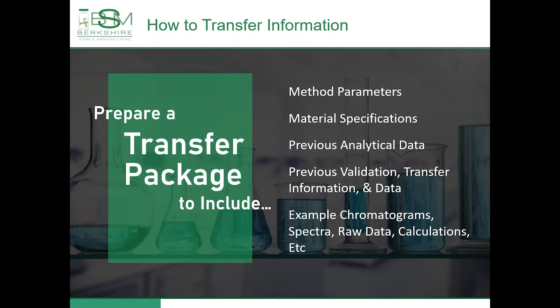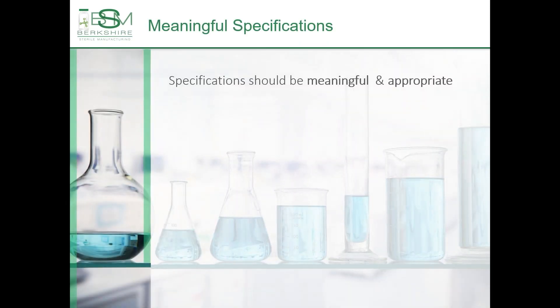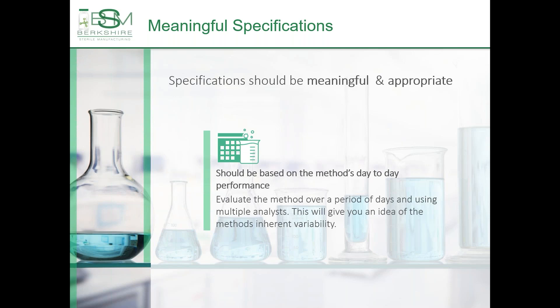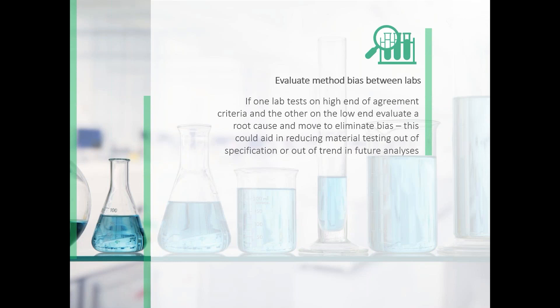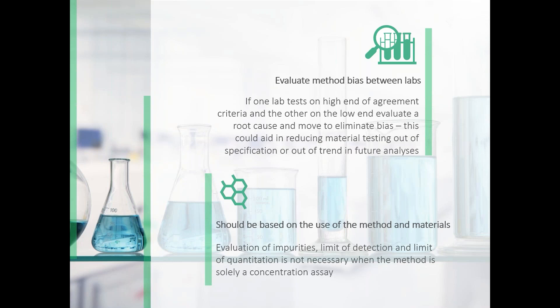Specifications submitted to the receiving lab should be meaningful and appropriate. The specifications should be based on a method's day-to-day performance — evaluation of the method over a period of days using multiple analysts will give you an idea of the method's inherent variability. An evaluation of any method bias between the receiving lab and the transferring lab should be done. If one lab tests on the high end of agreement criteria and the other on the low end, evaluate a root cause and move to eliminate any bias. This work ahead of time could aid in reducing material testing out of specification or out of trend in future analyses. Specifications should be based on the use of the method and the materials — for example, evaluation of impurities, limit of detection, and limit of quantitation is not necessary when the method is solely a concentration assay.